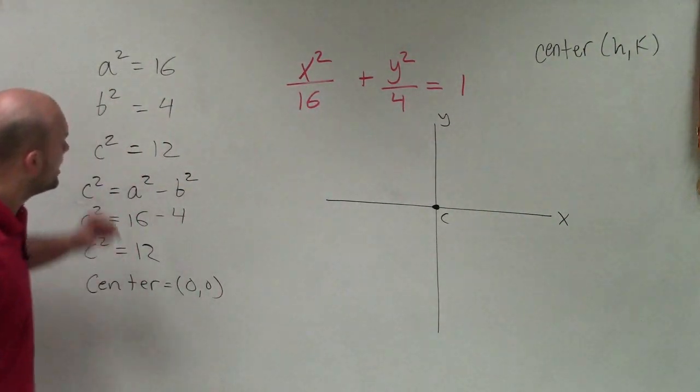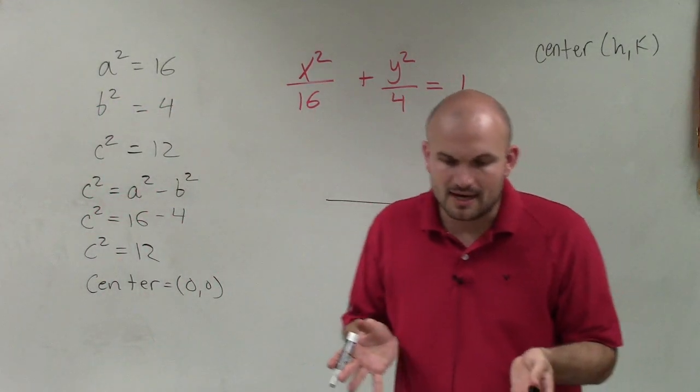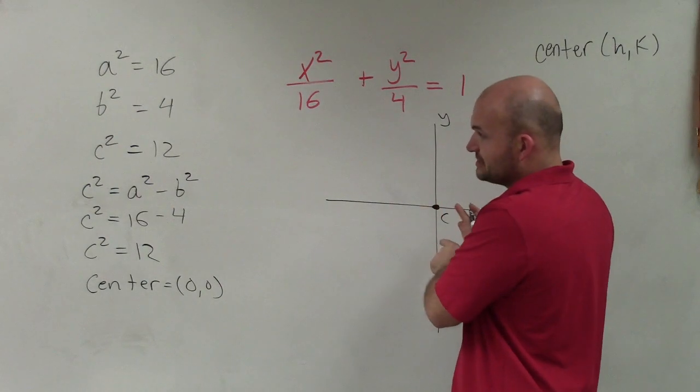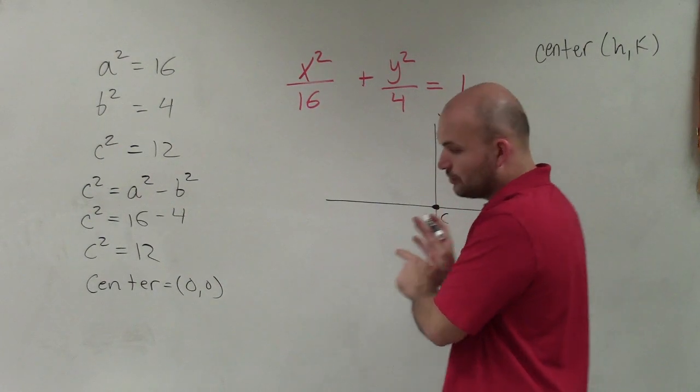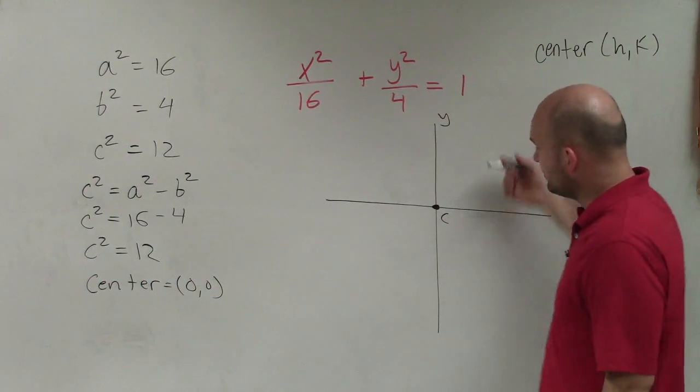The next thing is, now we need to identify my vertices and my foci. Now, from the center, the vertices are going to be a distance of a available. So we actually need to find the value of a. Now, more importantly, from the center, is my vertices going to be going left or right or up or down?